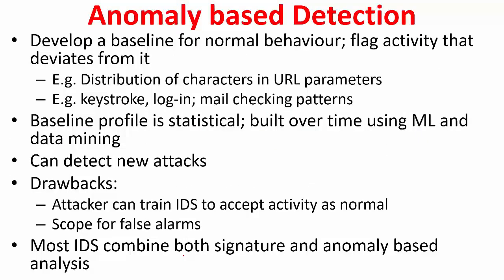In contrast to the signature-based system, anomaly-based detection works as follows. It develops a baseline for normal behavior and flags any activity that deviates from it. For example, in a lot of URLs you are accessing, there is a specific distribution of characters. But if you access a URL with very weird characters that don't normally follow the norm, then you think something suspicious is happening and it raises a flag. Similarly, the keystroke pattern — a given user may type keys in a particular way. If later you see a very different pattern, maybe someone else is trying to log in. How often you check mail, how often you log in — all this forms the baseline.